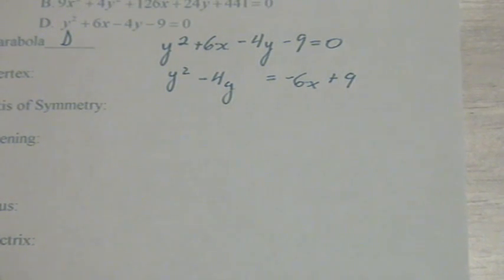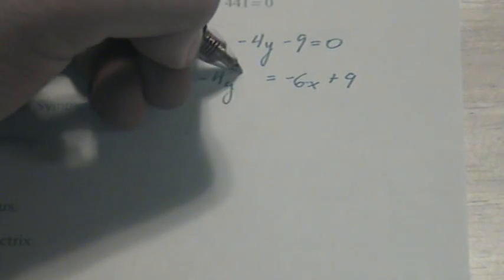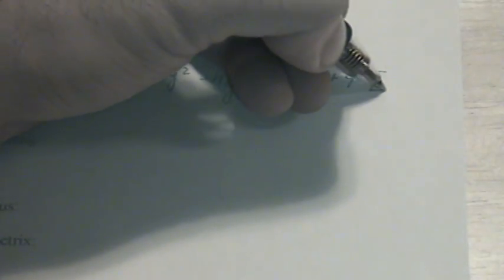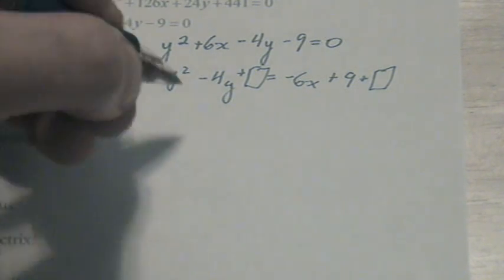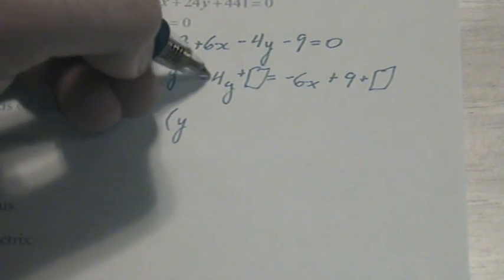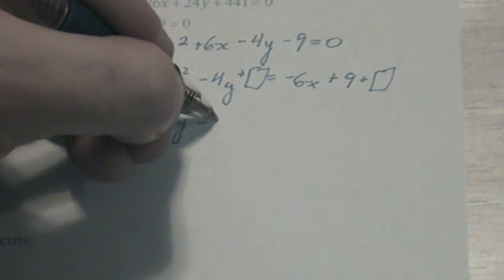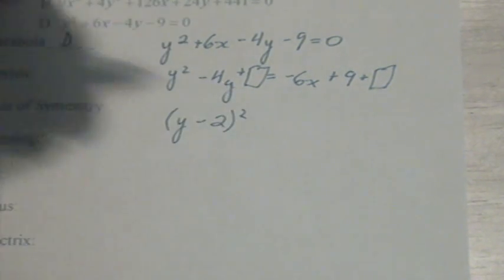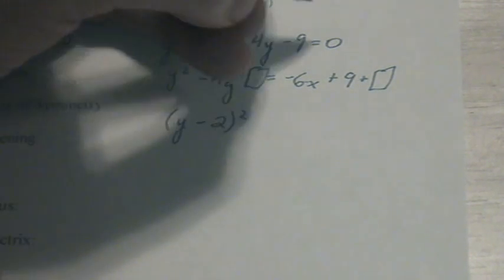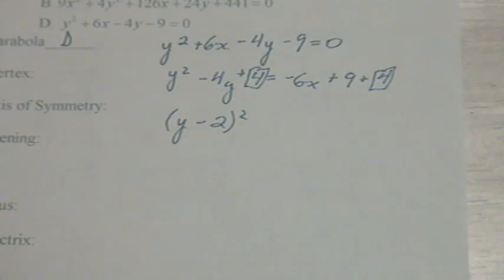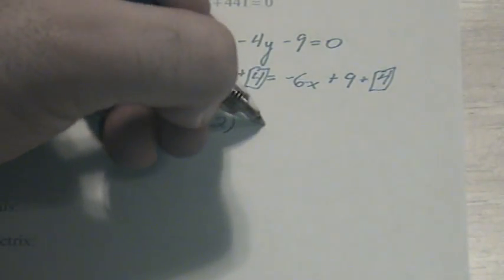Now we're going to complete the square. Plus box, plus box. Half of negative 4 is negative 2, giving us y minus 2 squared. That negative 2 squared is 4, which we'll put in both boxes. The left side of the equation is done.